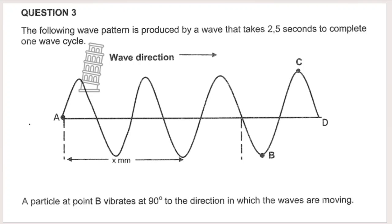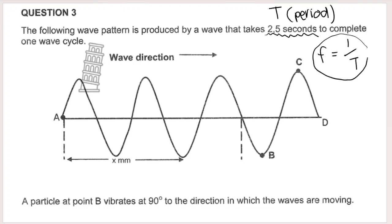Question 3: the wave pattern shown is produced by a wave that takes 2.5 seconds to complete one wave cycle. The time taken to complete one wavelength or one wave cycle is known as the period T. So they are giving us the period — knowing the period means I can calculate frequency because frequency equals one over period. And if I know frequency I can always work out wave speed or wavelength. They also give the wave direction and label some points on the wave.